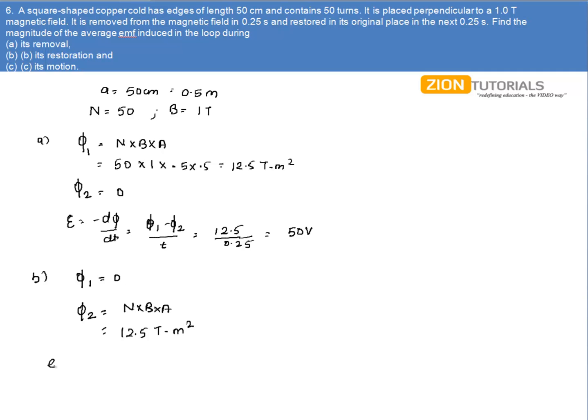The EMF induced will be equal to dφ by dt, that is φ₂ minus φ₁ divided by time it took, which comes out again to be 50 volts.